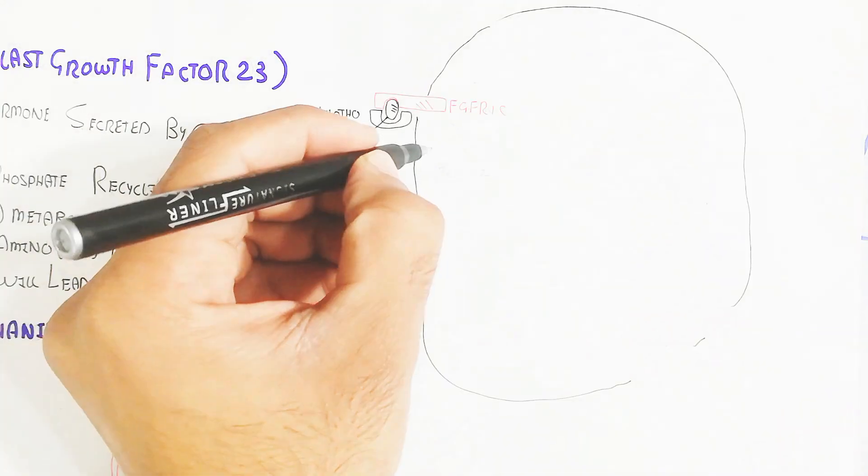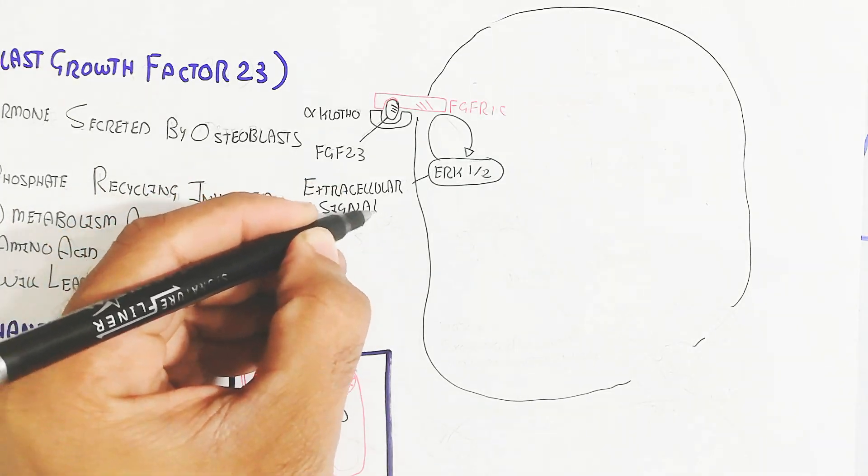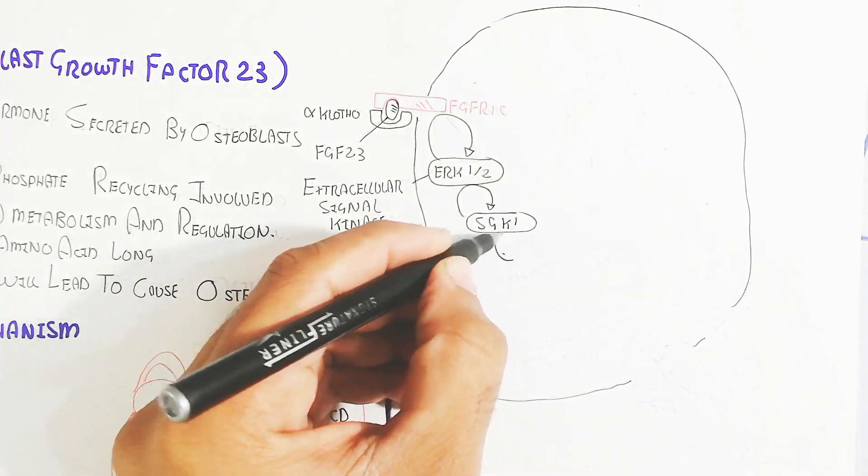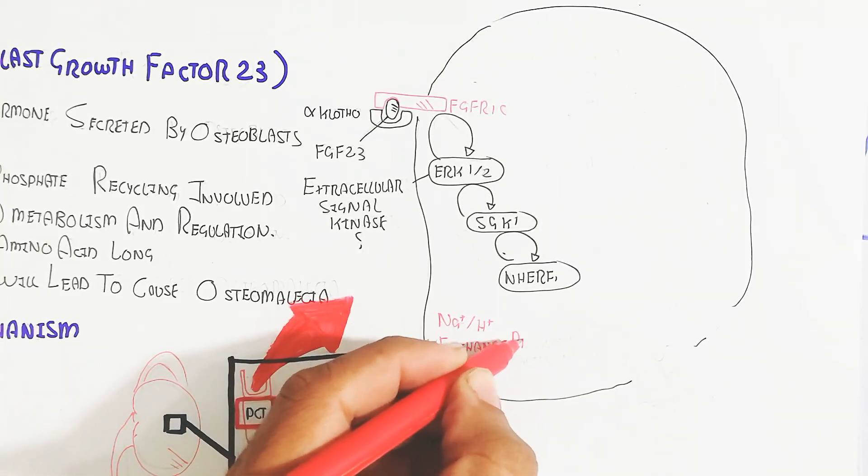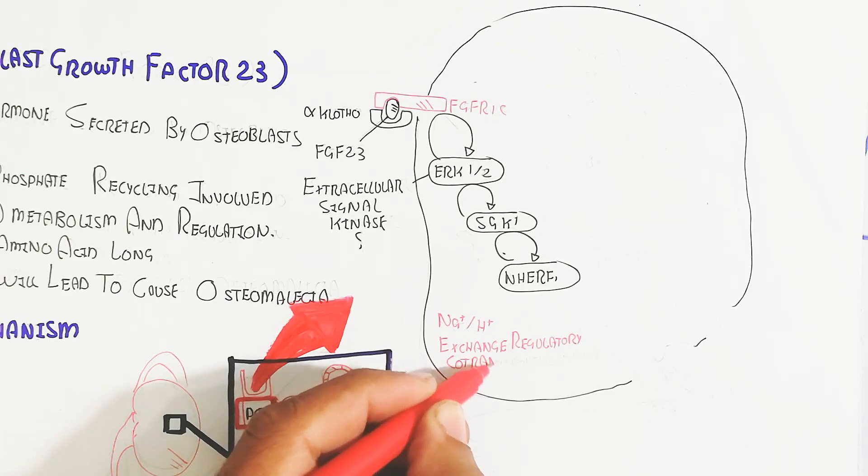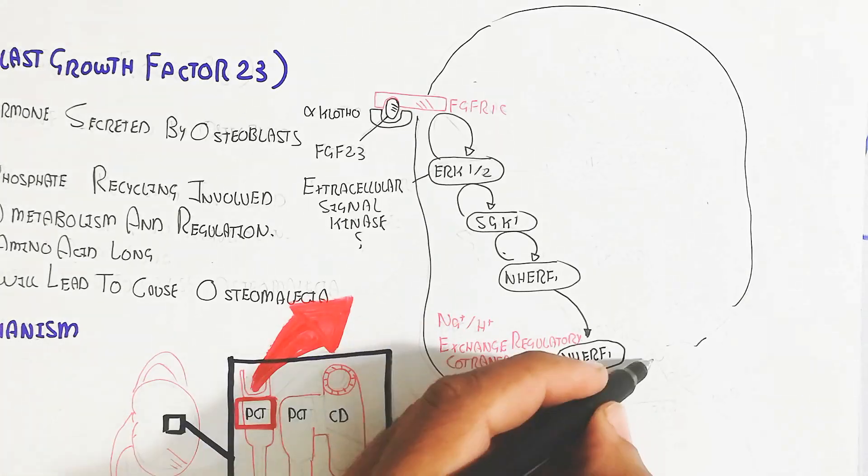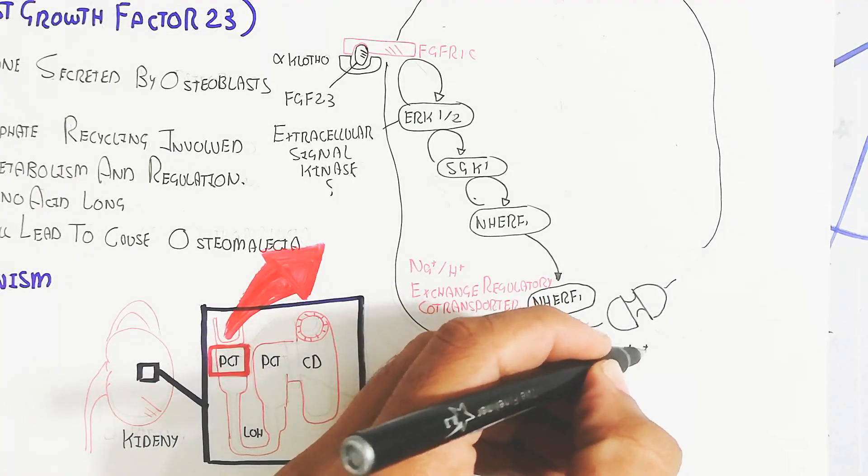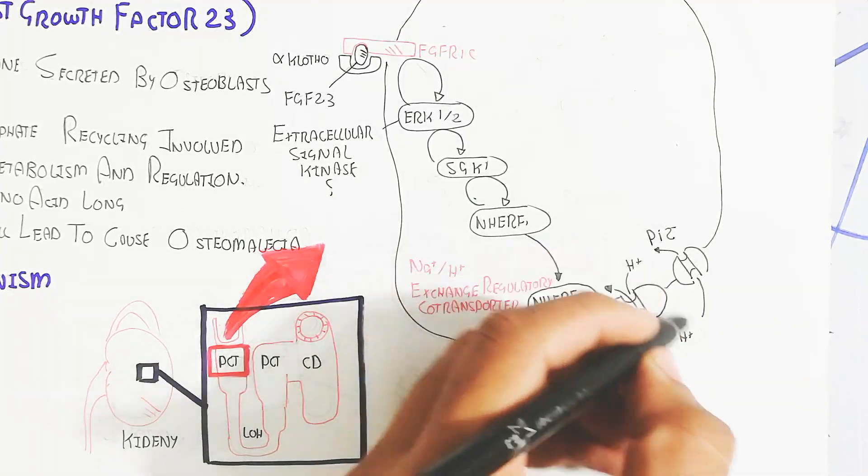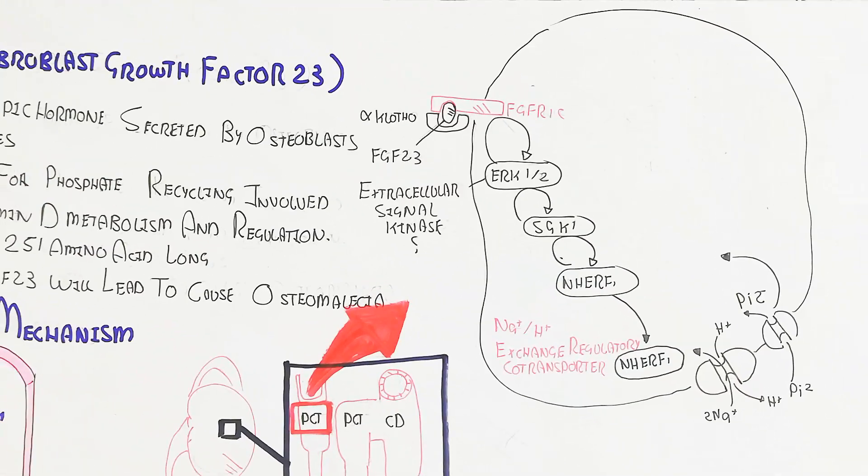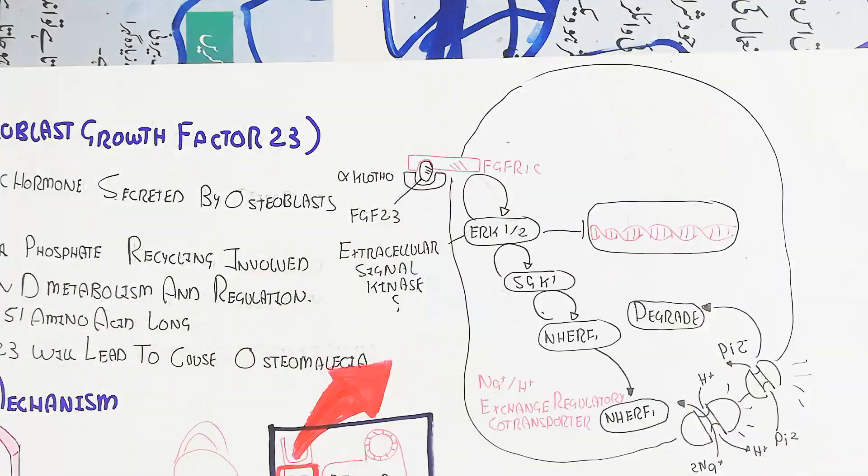FGF23 when bound with alpha-klotho will bind to FGF receptor 1C. In this way it will trigger the ERK1 and 2 extracellular signal kinase possibly, which will lead to SGK1 glycogen synthase kinase 1, which will lead to sodium proton exchange regulatory co-transporter will activate. Basically the exchange regulatory co-transporter will bind with the co-transporter sodium and proton exchange, which will lead to degradation. After the degradation, basically the sodium proton exchange is important for the inorganic phosphate reabsorption. But degradation will inhibit the reabsorption, while the excretion will be possible.